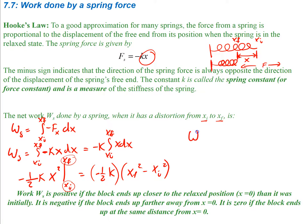Our final equation for work done by a spring is one-half k times xi squared minus one-half k times xf squared. Work is positive if the block ends up closer to the relaxed position than it started, and negative if it ends up further away. If the block returns to the same distance from equilibrium as it started, the total work is zero.